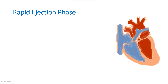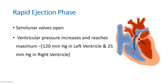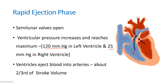Next is the rapid ejection phase. Pressure has increased enough to open the semilunar valves, and blood is rapidly pumped out via the aorta and pulmonary vessels. Ventricular pressure reaches a maximum of 120 mmHg in the left ventricle and 25 mmHg in the right ventricle. Approximately two-thirds of the stroke volume is ejected during this phase.